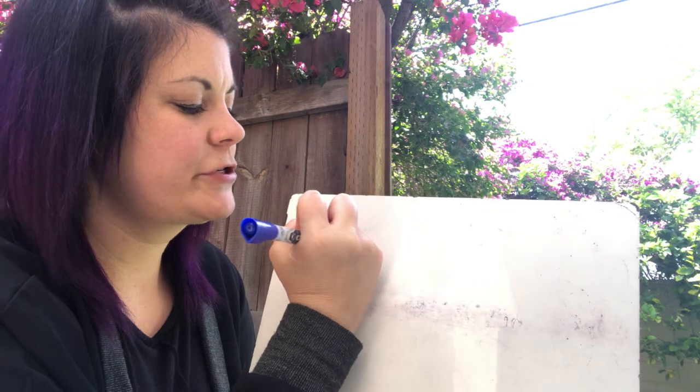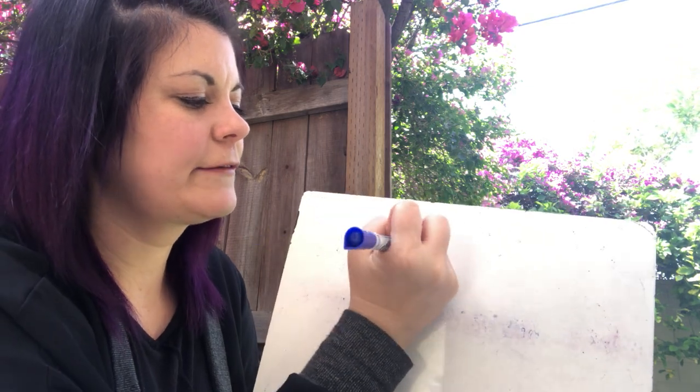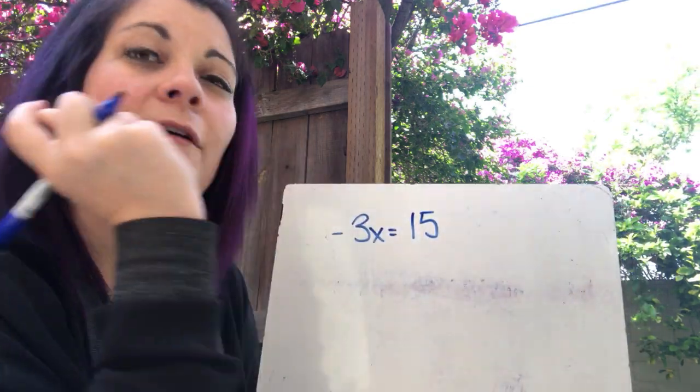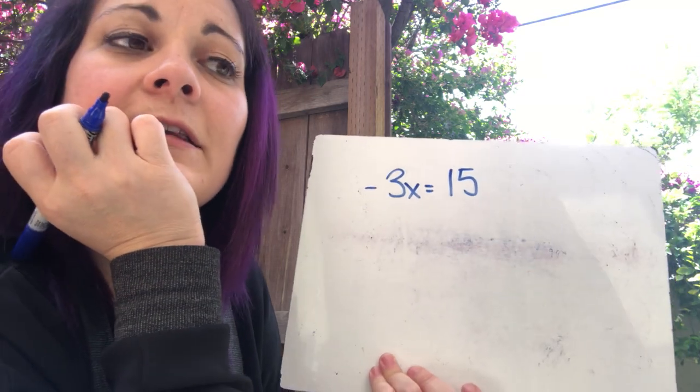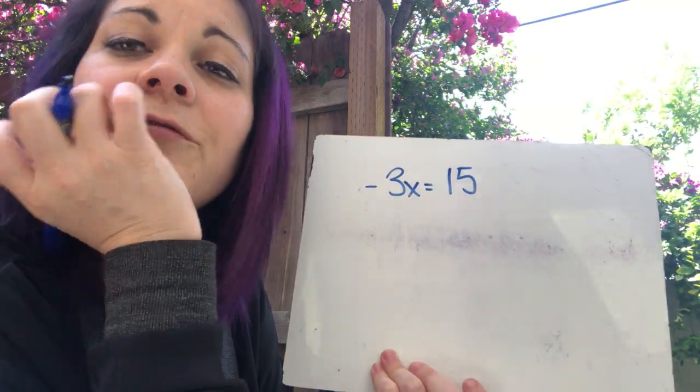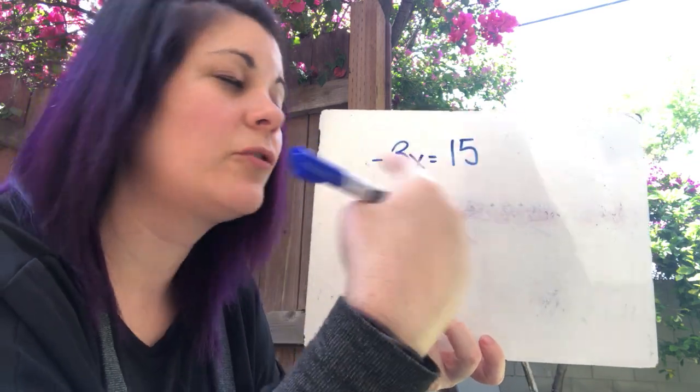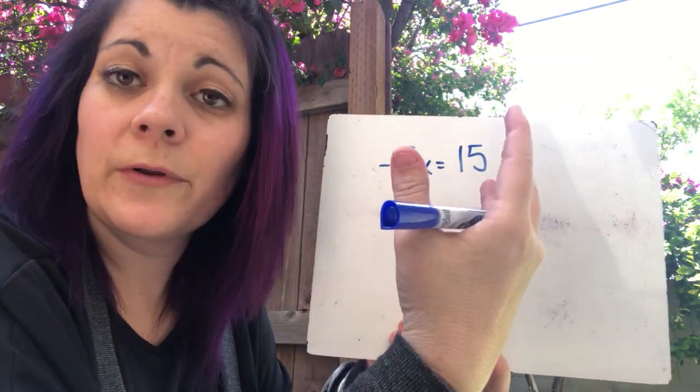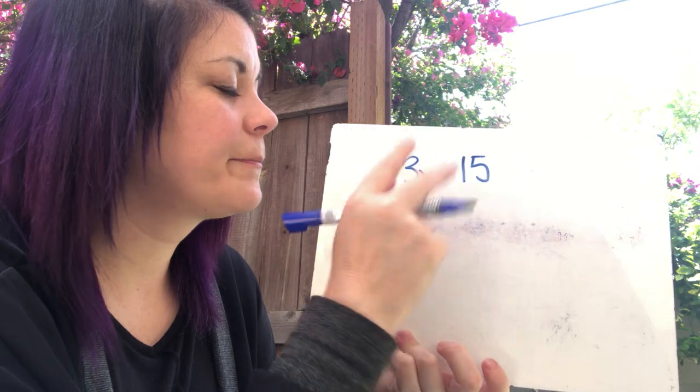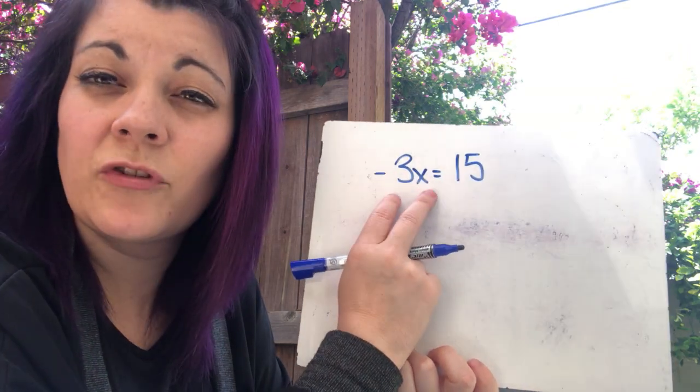So negative coefficients. Negative coefficients are like -3x = 15. It's okay that they're negative. Negative 3x, the negative coefficient is the same as a positive coefficient in terms of doing the math the same, because this is still multiplication in between.